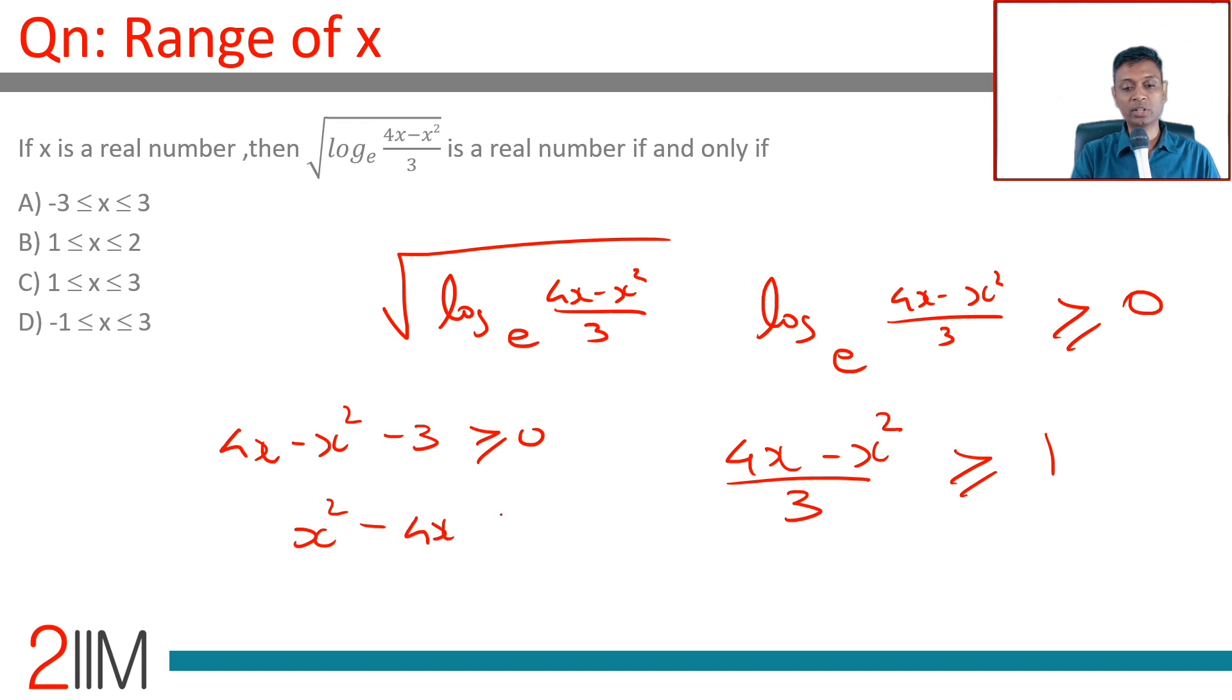Or x² - 4x + 3 is less than or equal to 0. Factoring: (x - 1)(x - 3) ≤ 0. So x should lie between 1 and 3, including 1 and including 3: 1 ≤ x ≤ 3. That is the answer we are looking for.